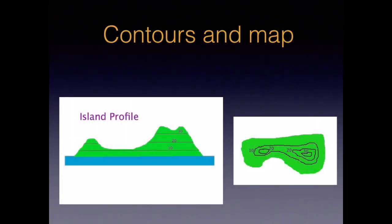A bird's-eye view of your island is on the right, which is in fact a perfect contour map of your island. So this gives us the definition of a contour line: a continuous line of constant elevation.